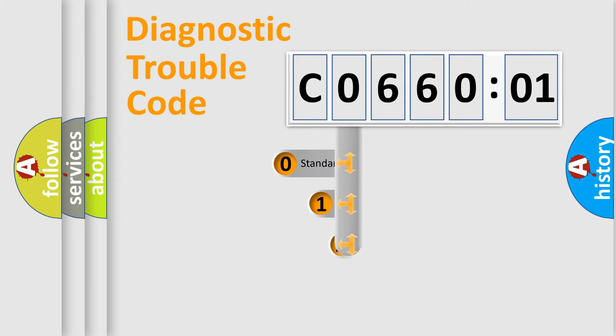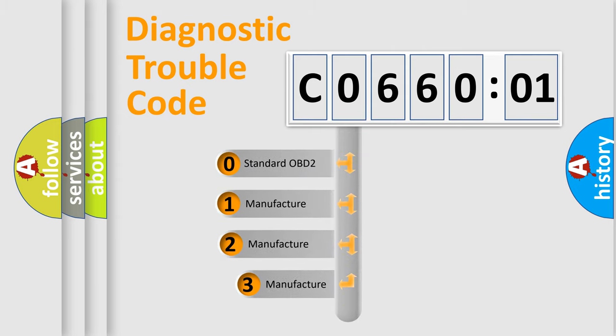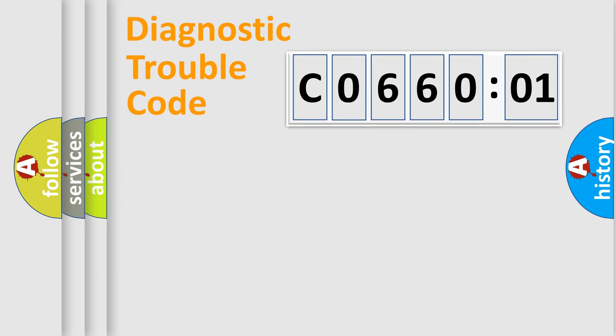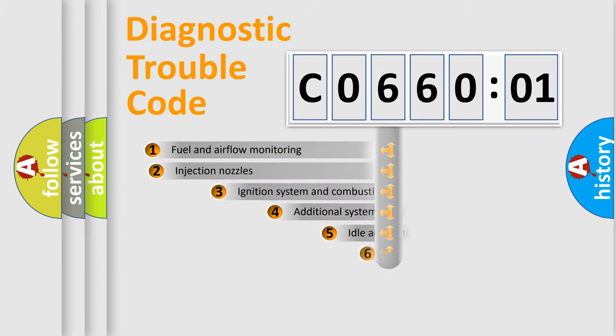This distribution is defined in the first character code. If the second character is expressed as zero, it is a standardized error. In the case of numbers 1, 2, or 3, it is a more specific expression of the car-specific error.